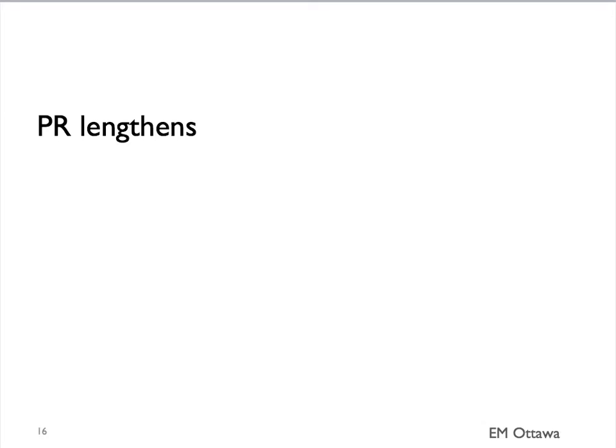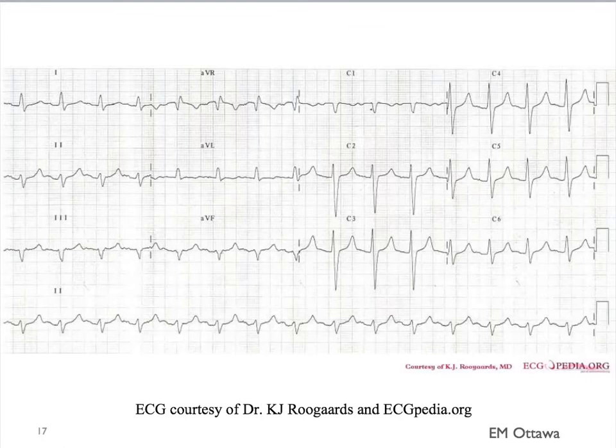Let's first look at the PR lengthening on a hyperkalemia ECG. If you look at the PR interval in this ECG, you will notice it's more than 5 small squares. In this ECG, you can still see P waves.